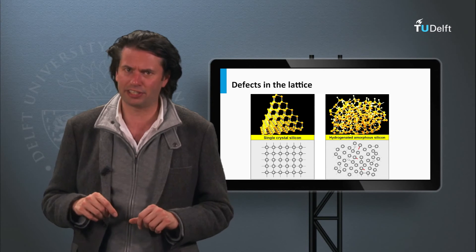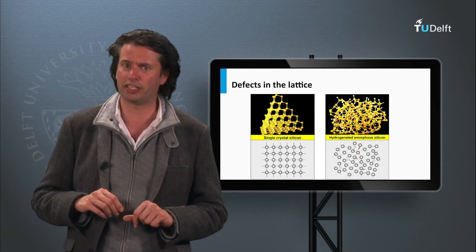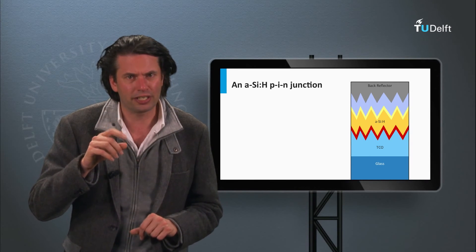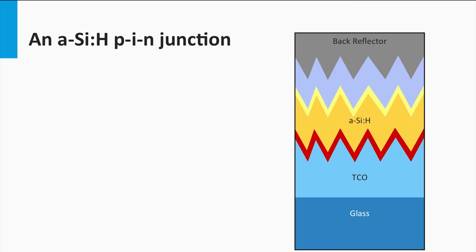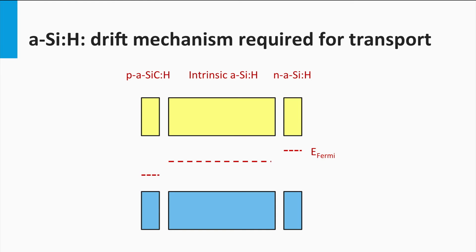This means that charge carrier transport in a thick absorber layer cannot rely on diffusion. A typical amorphous silicon solar cell is therefore not based on a p-n junction like wafer-based crystalline silicon solar cells — it is based on a p-i-n junction. The absorber layer is an intrinsic amorphous silicon film sandwiched between thin layers of p-doped and n-doped amorphous silicon. The p- and n-doped layers create a built-in electric field over the intrinsic absorber layer, as illustrated by the electronic band diagram of the amorphous silicon solar cell.